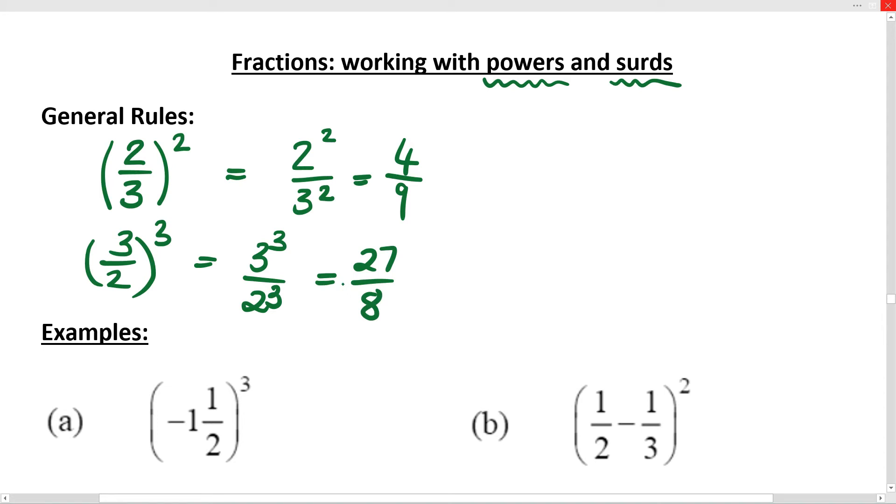Now what about square roots? What if we said the square root, because if there's no number there it's a square, right? Of 4 over 9. Well that's exactly the same as saying the square root of 4 over the square root of 9. Square root of 4 is 2, square root of 9 is 3.